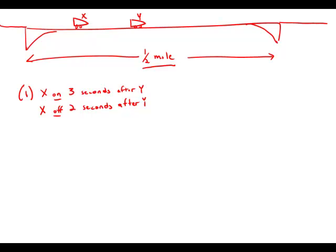And so when they entered the bridge, car X was following Y with a lag of three seconds. By the time they got to the end of the bridge, car X was following car Y with a lag of two seconds. That means car X was gaining ground on car Y, and it means that car X spent one second less on the bridge than car Y.